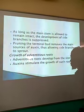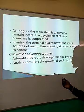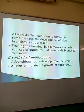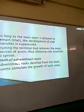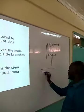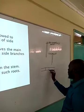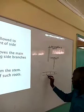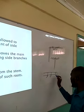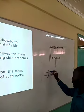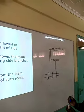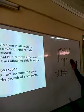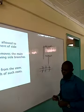We also have to look at the growth of what we call adventitious roots, which is another effect of auxins. Adventitious roots develop from the stem — auxins stimulate the growth of such roots. For example, if you look at sugarcane, which has internodes, if you put the sugarcane horizontally on the ground, then roots are going to develop there. These are what we call adventitious roots, and this has been employed in the propagation of sugarcane.